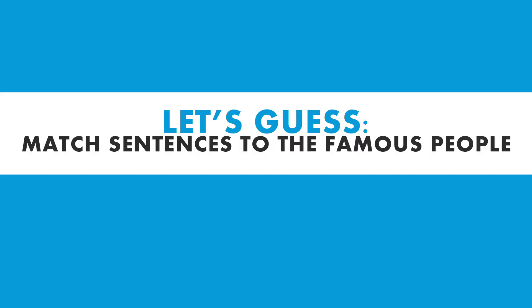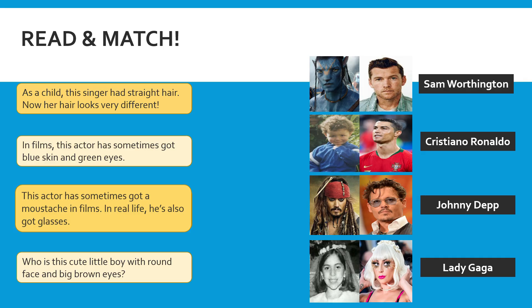Now for the last activity — matching sentences to the correct famous people. Number one: 'As a child, this singer had straight hair; now her hair looks very different.' The only girl with straight hair whose look changed dramatically is Lady Gaga. Number two: 'In films, this actor has sometimes got blue skin and green eyes' — that is Sam Worthington.